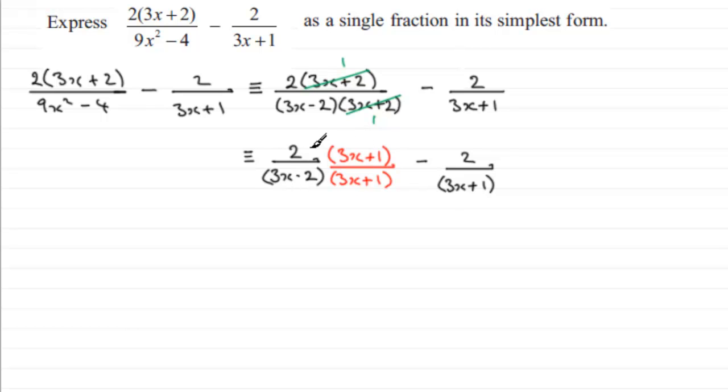Timing top and bottom by exactly the same value is like multiplying this fraction here by 1, so obviously it's not going to change the value of it, it will just change the appearance of it. Similarly for this one, if we times top and bottom by 3x minus 2 over the 3x minus 2, we're multiplying by 1, but we actually get 2 fractions which will now share the same common denominator.